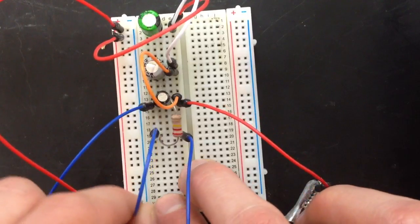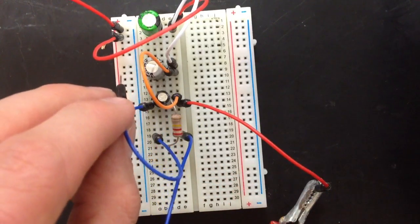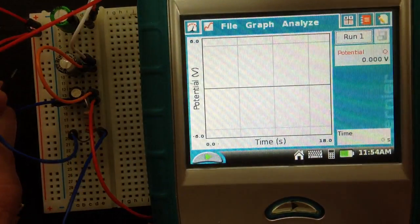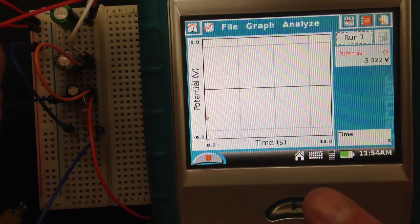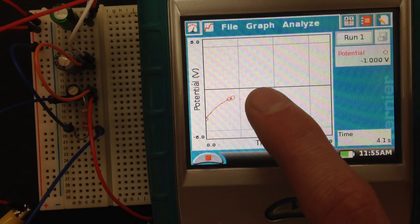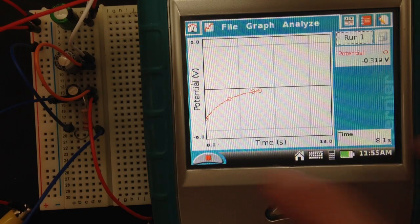Now, I'm going to complete the circuit here and record what happens to the voltage across my resistor here. So, here we go. If you look, I have a voltage, and now that voltage across the resistor is gradually approaching zero. And if you look,